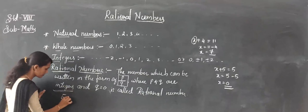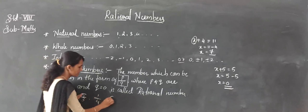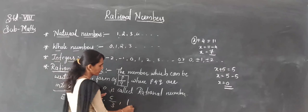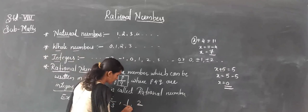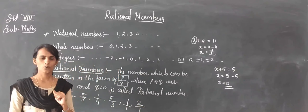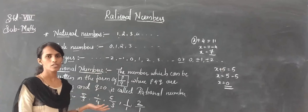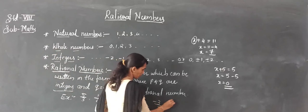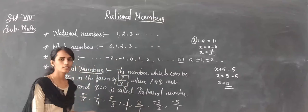For example, rational numbers include 5 by 3, 1 by 4, and 6 by 3. Even integers like 1 and 2 are rational numbers because they have 1 as the denominator. Rational numbers may be positive or negative — for example, minus 3 by 2 and minus 5 by 1 are also rational numbers.